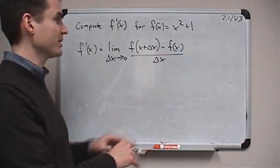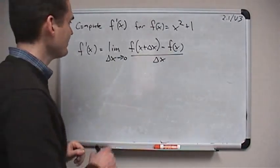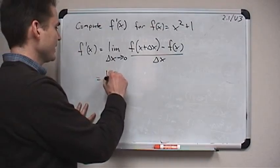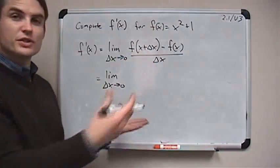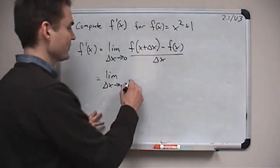Here x isn't a particular number yet. We haven't chosen a number. So very similar calculation. The only difference, really, is that in the last example, I think x was 1. Here it's just x. Don't choose anything yet.